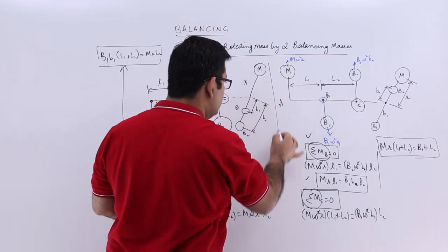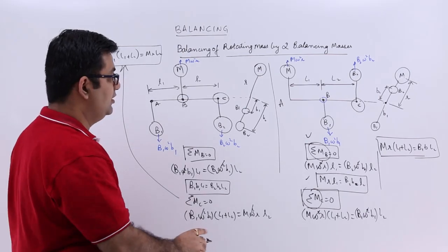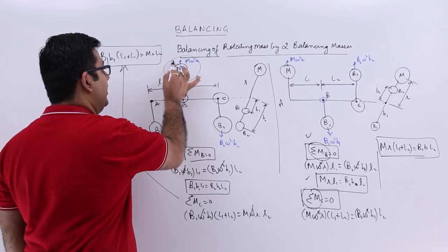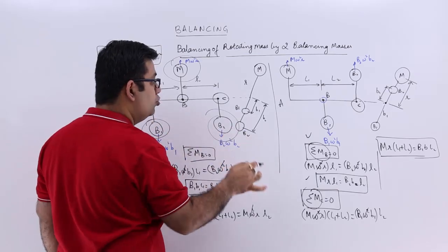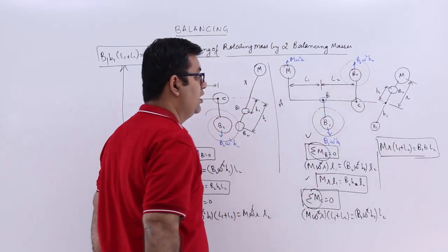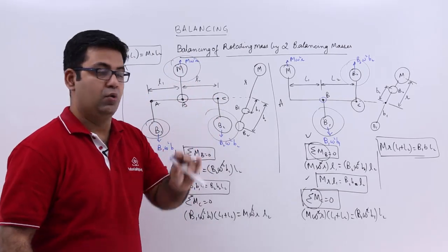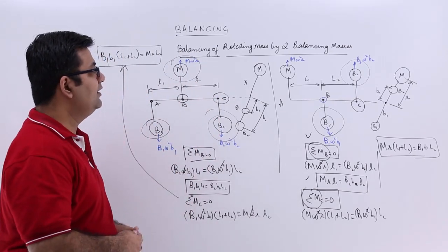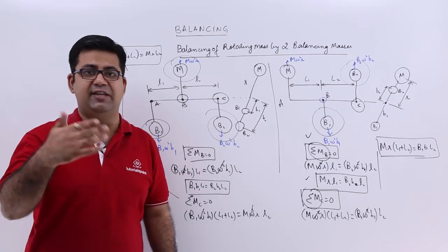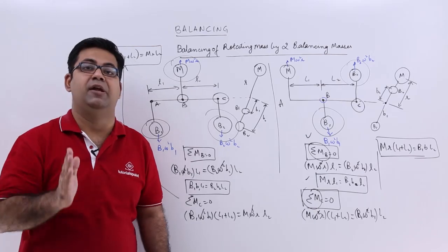So these two cases cover the balancing of a rotating mass by two balancing masses that are in different planes. In the next video we will look at the case where there are several masses rotating in the same plane.